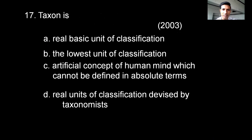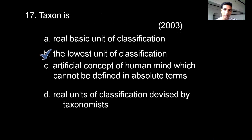Next question on taxon: Options are — real basic unit of classification, the lowest unit of classification, artificial concept of human mind which cannot be defined in absolute terms, or real unit of classification devised by taxonomists. The correct option here is the lowest unit of classification.